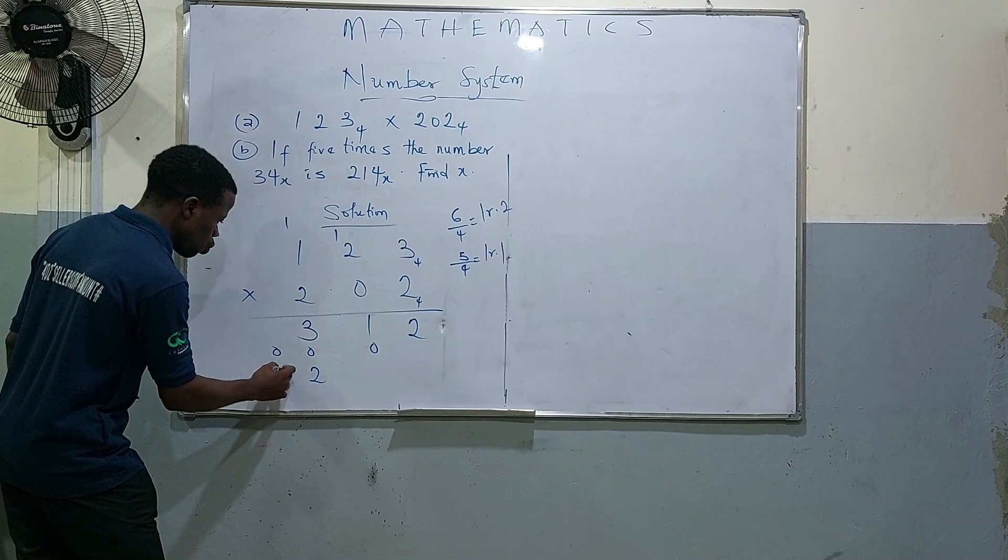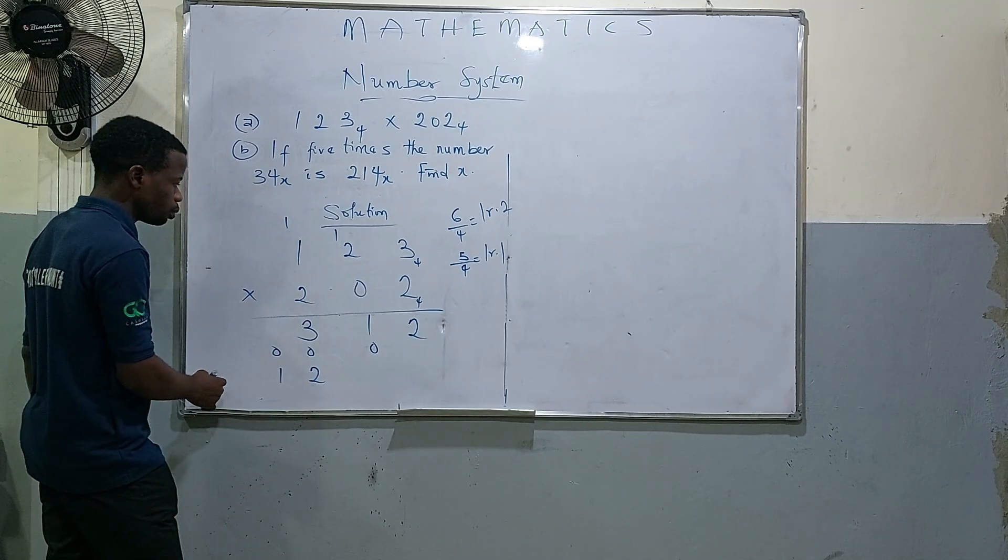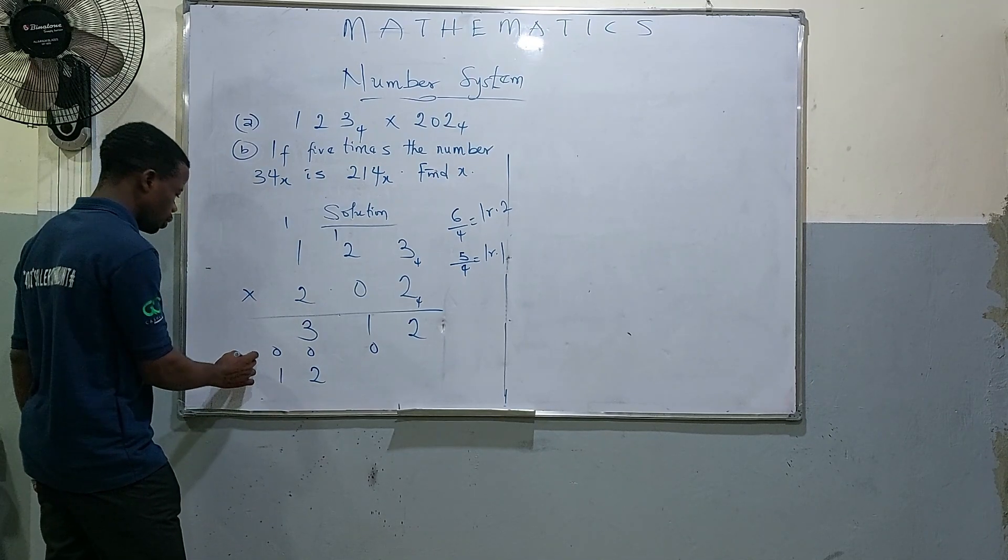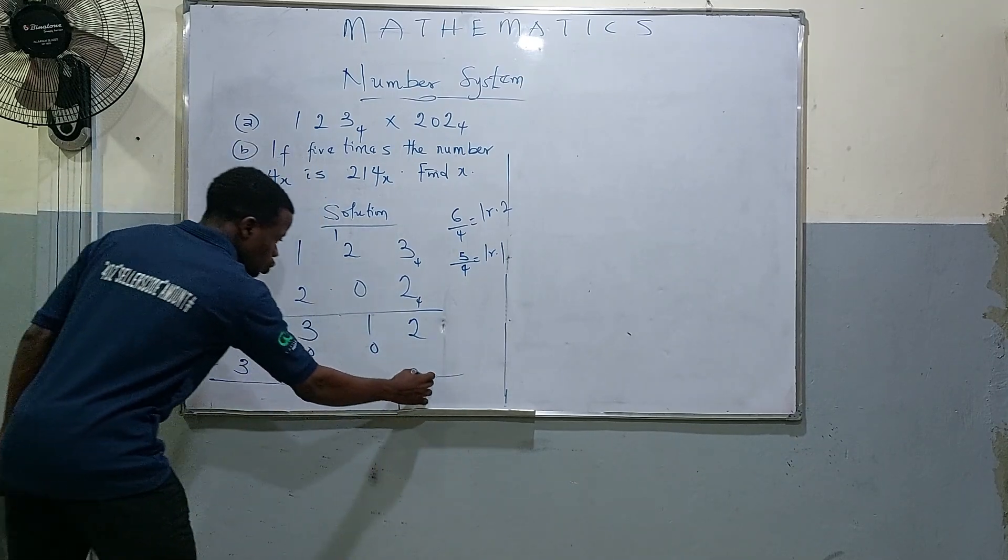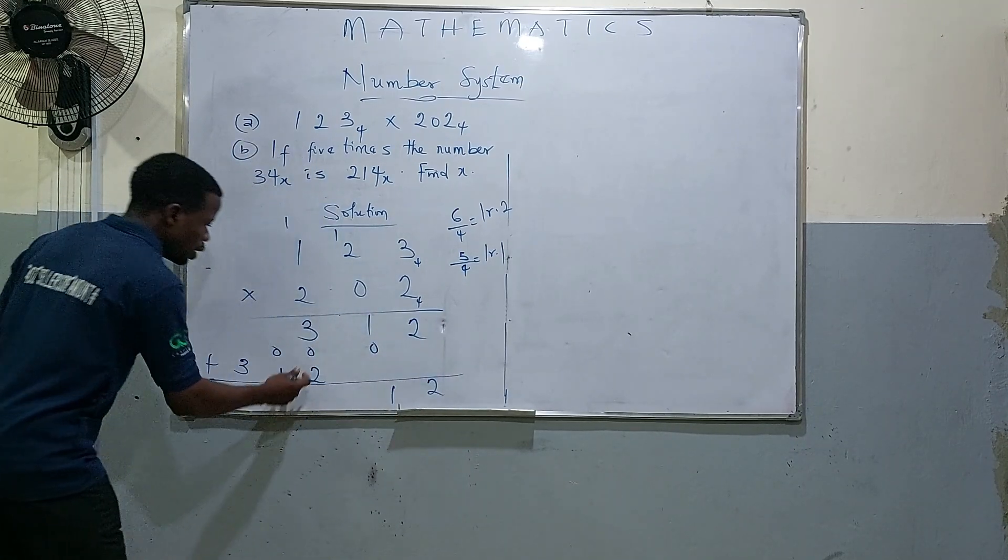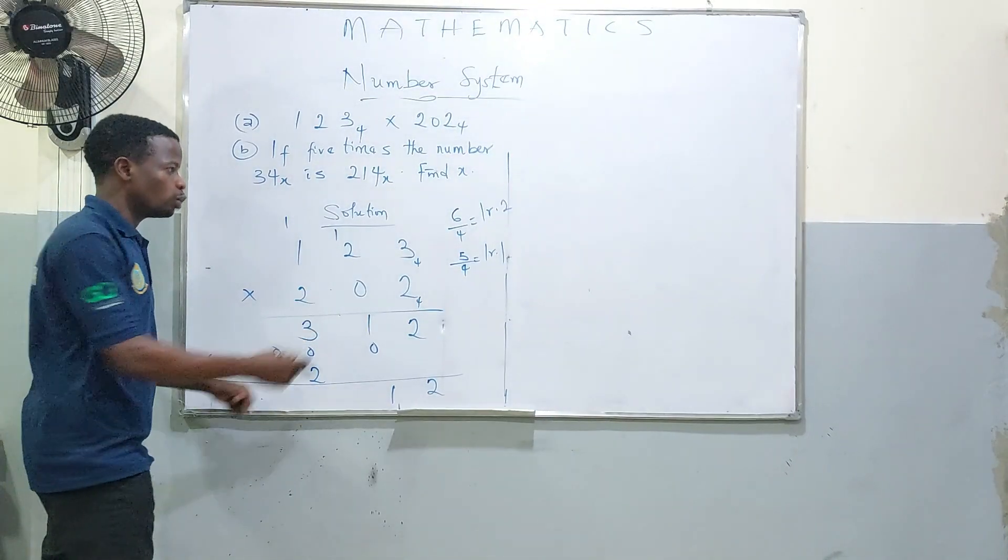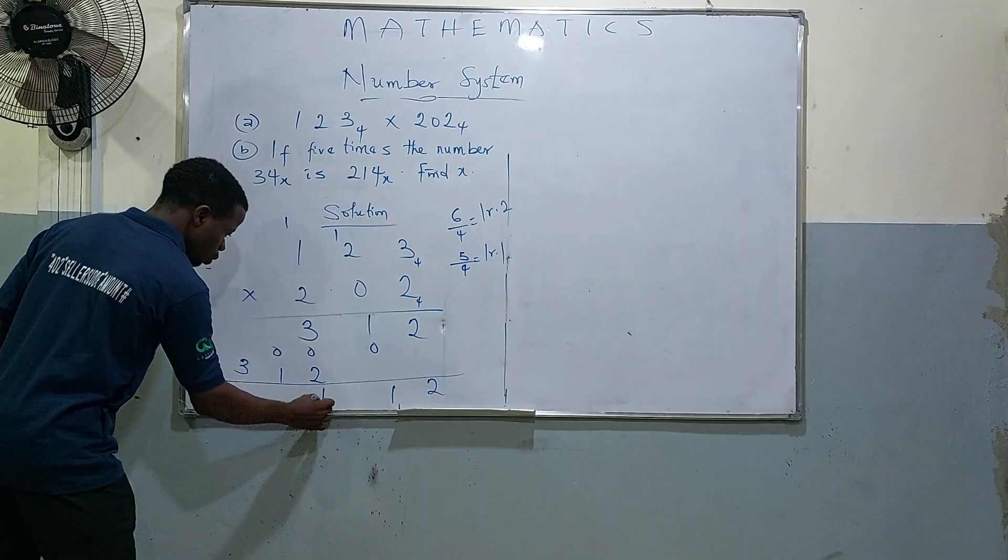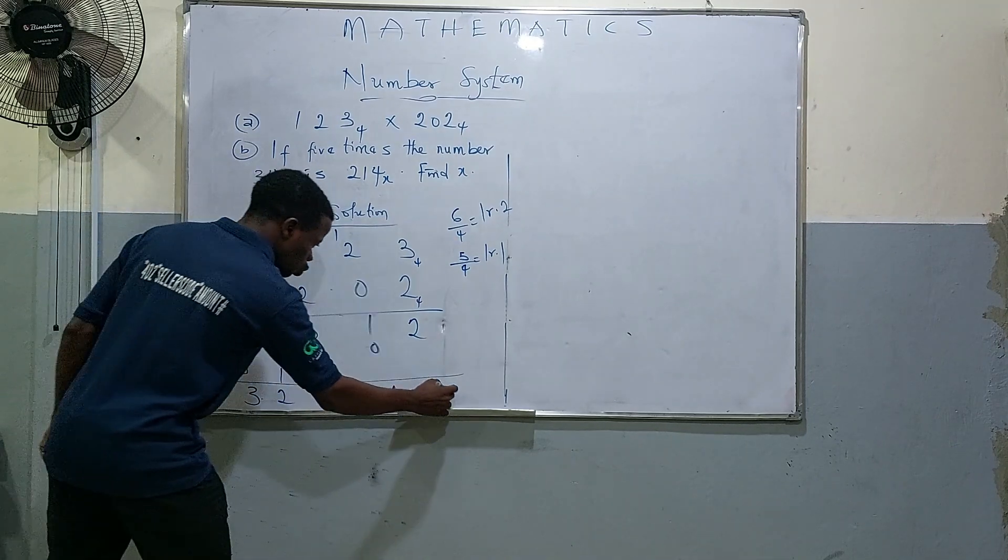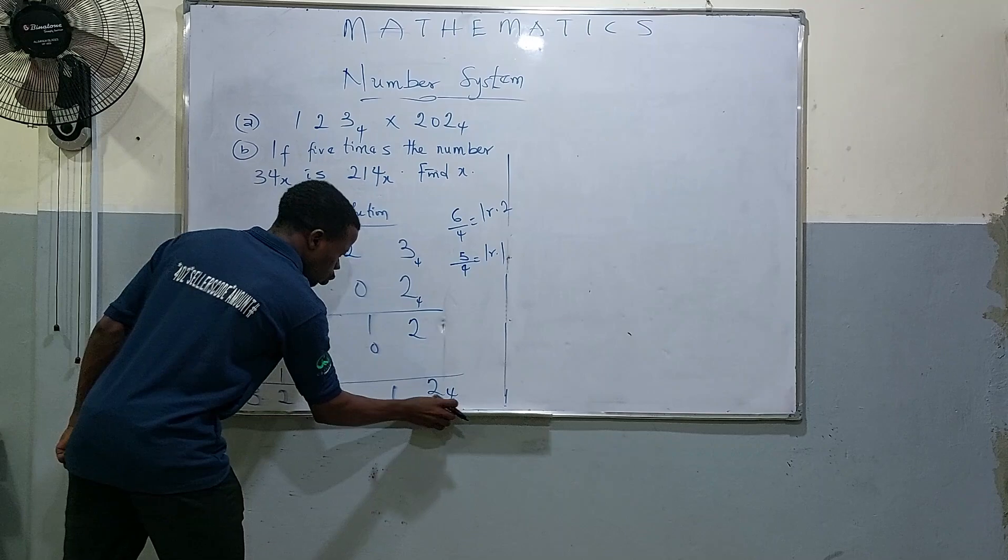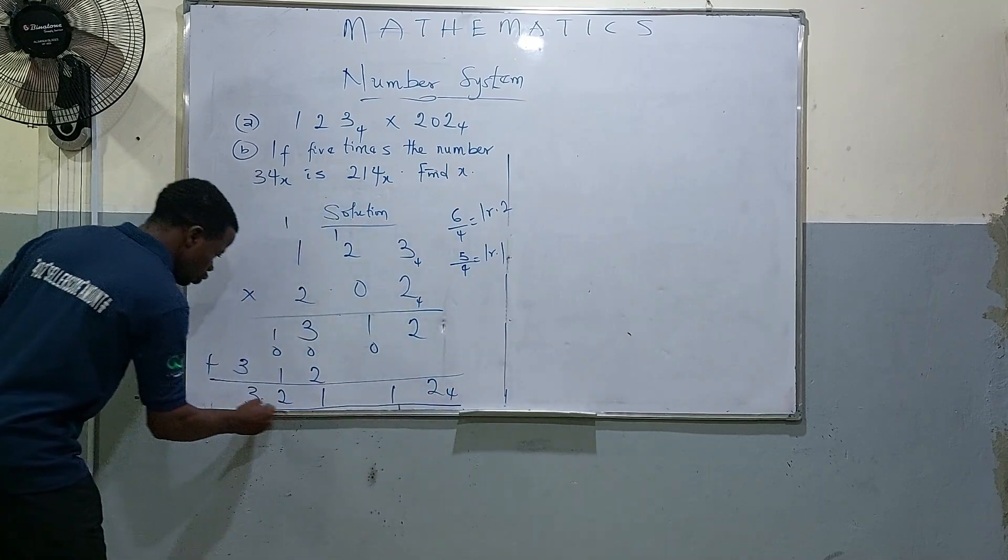So we add 2, 1. Then we have 3. So add up. And then we add 2, 1, 5. We can write 5. It's in base 4. Do the same thing. We add 1, we keep 1. We add 2. We add 3, 2, 1, 1, 2 in base 4. You have gotten the answer to this question.